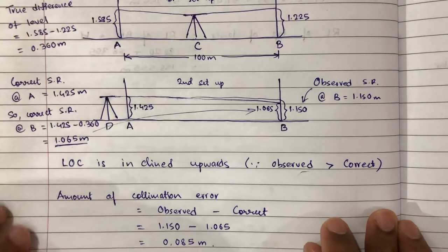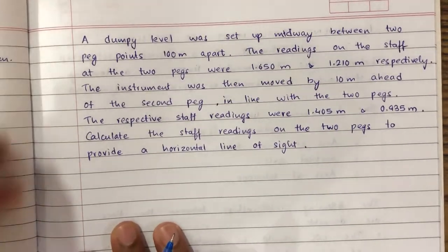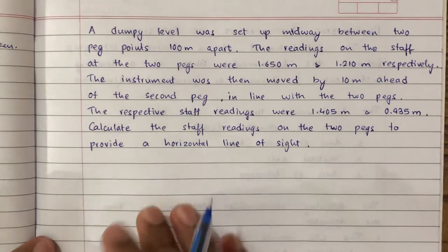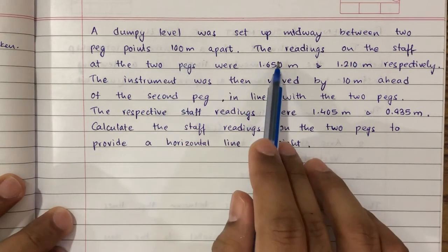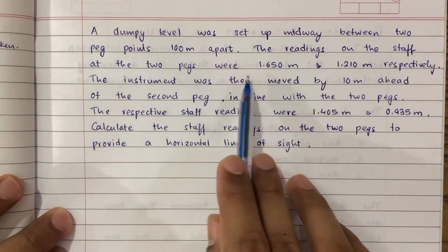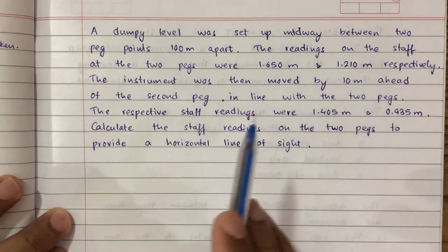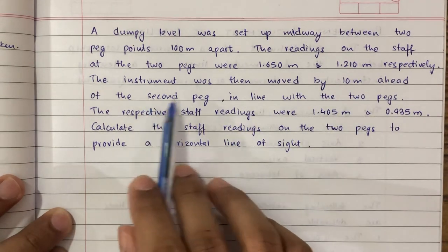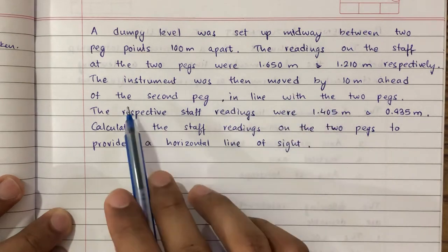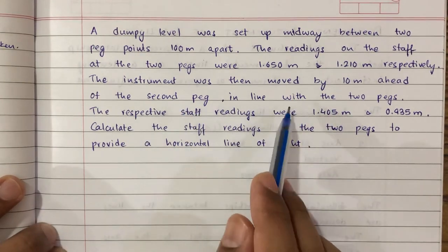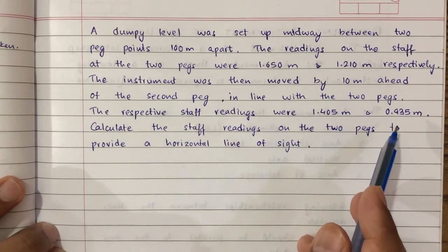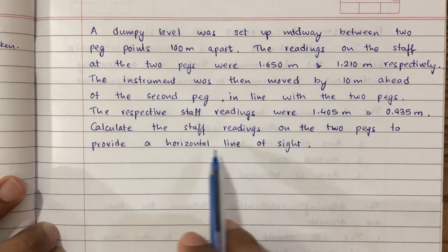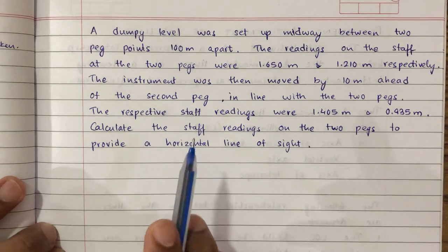Let us solve another problem — this problem is most commonly asked. A dumpy level was set up midway between two peg points 100 meters apart. The readings on the staff at the two pegs were 1.650 meter and 1.210 meter respectively. The instrument was then moved 10 meters ahead of the second peg in line with the two pegs. The respective staff readings were 1.405 meter and 0.935 meter. Calculate the staff readings on the two pegs to provide a horizontal line of sight.